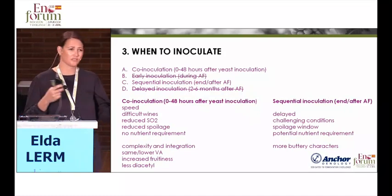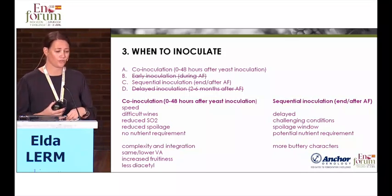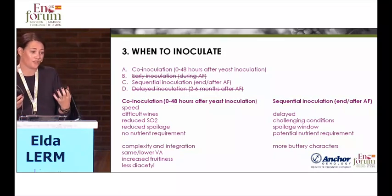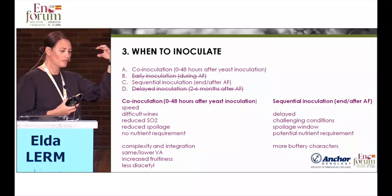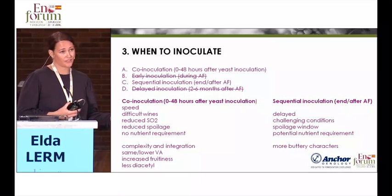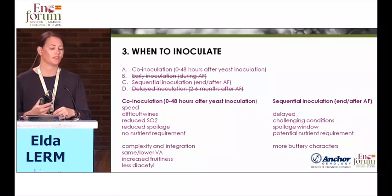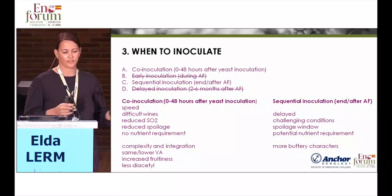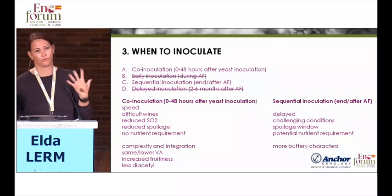Both, as with spontaneous versus inoculated, have positives and negatives. Depending on your situation and what you want to achieve, this will influence your decision. In general, it tends to be an easier process for the bacteria during co-inoculation, whereas sequential — depending on the wine — tends to be more challenging. You have to be more aware of nutrition and temperature, as things start decreasing after harvest. And then of course, the big impact on sensory profile: fruity and complex versus more buttery style.